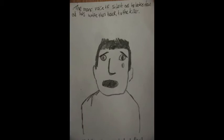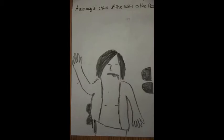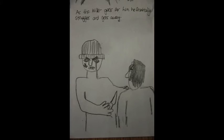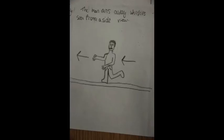Another close-up is used to show the man looking at his wife and then up to the killer's face. A cutaway is then used showing the wife on the floor with blood pouring from her mouth. A medium shot is used as the killer goes for him. He frantically struggles away as the music becomes much more upbeat. A long shot is then used showing the man running away. Another title sequence comes up saying 'Callum Hall.'